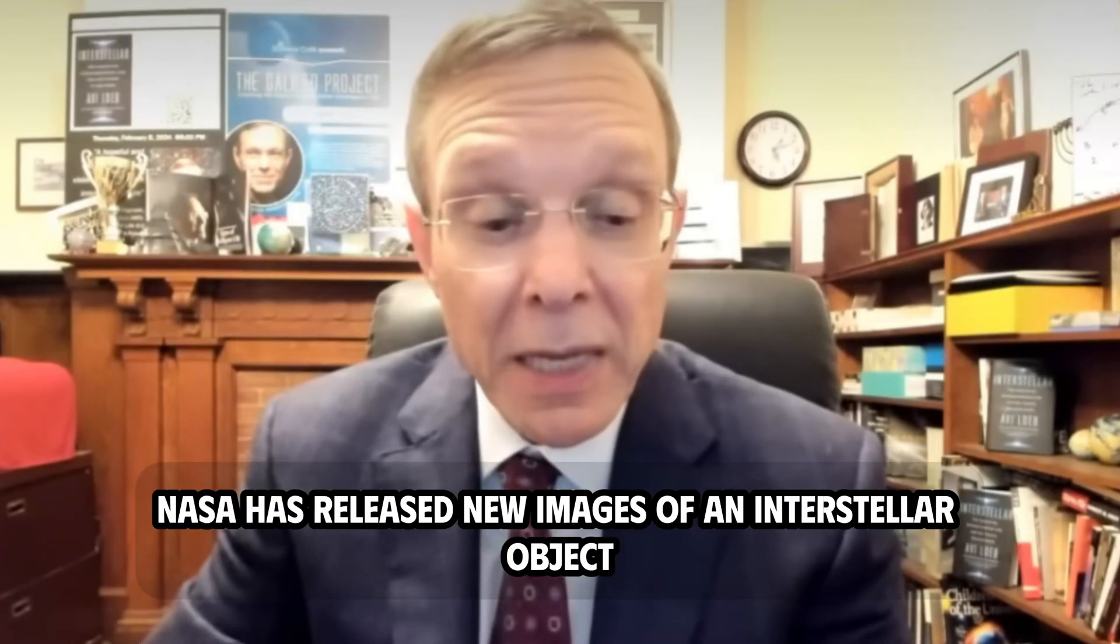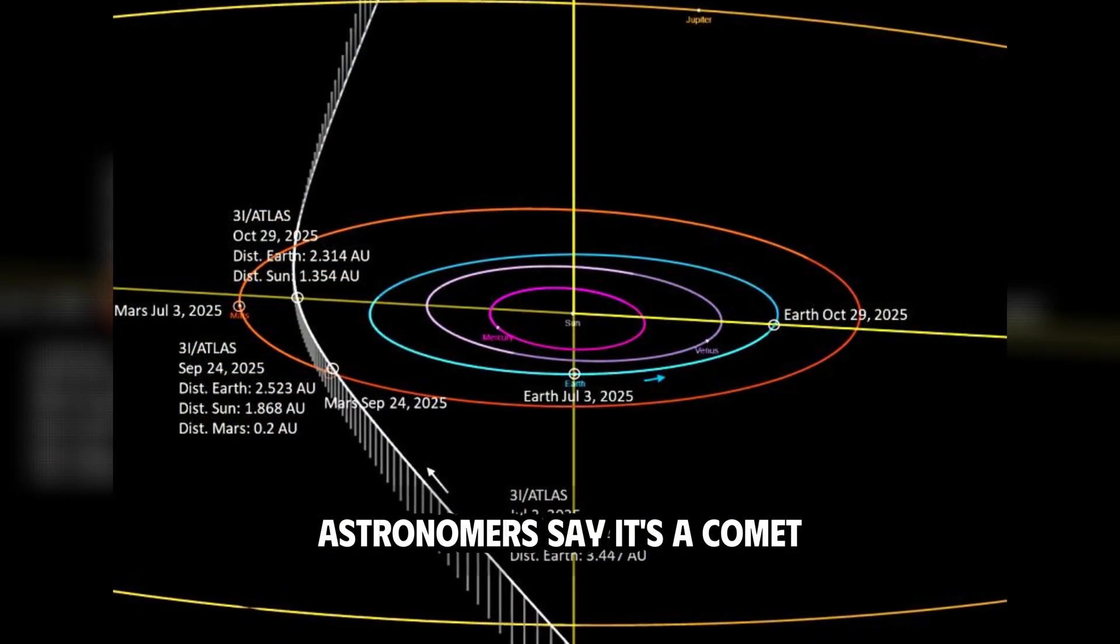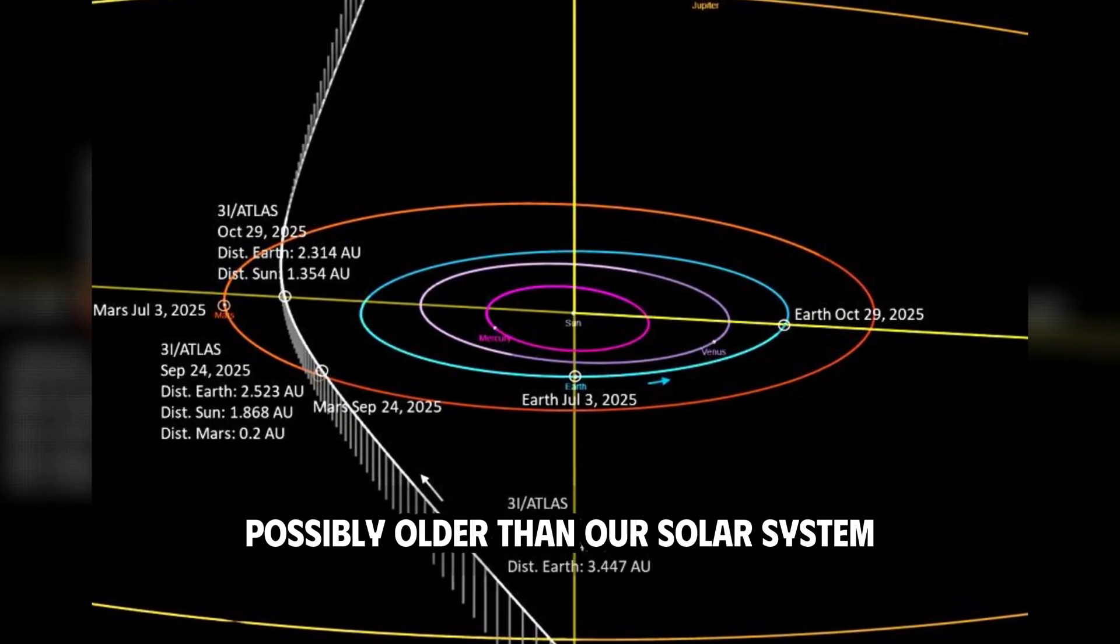NASA has released new images of an interstellar object. Astronomers say it's a comet, possibly older than our solar system.